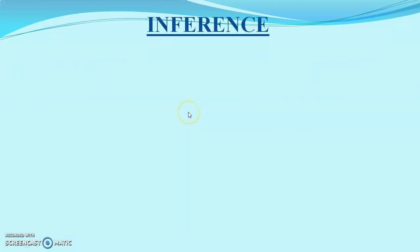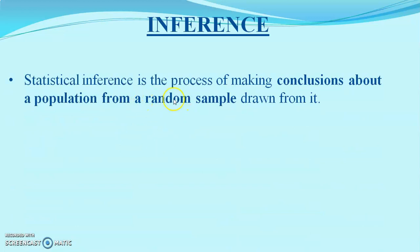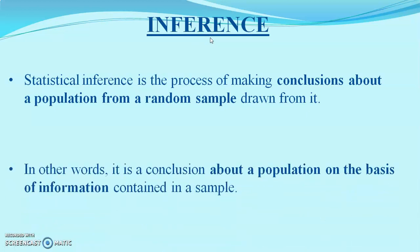Another terminology is inference. Inference is the conclusion about a population from a random sample. From the population we select a sample, from the sample we get information, and from the information we make a conclusion — that conclusion is called inference. In other words, it is the conclusion about a population on the basis of the information contained in a sample.